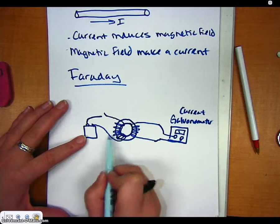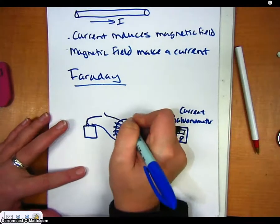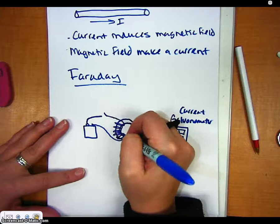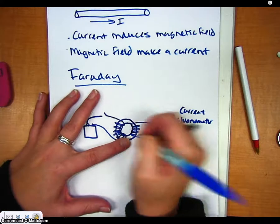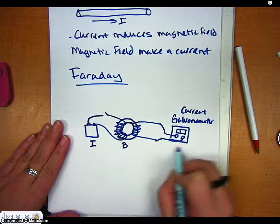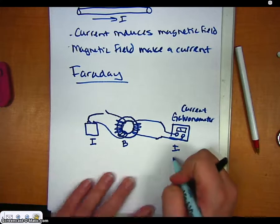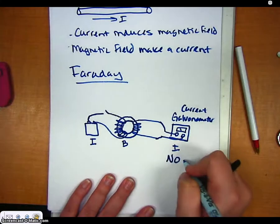By having a magnetic field flowing through a coil of wire, it should make a current. So we have the current here, which makes the magnetic field here, which then we would hope would make a current there. So when he tried this experiment, it didn't work. His results were no current here.